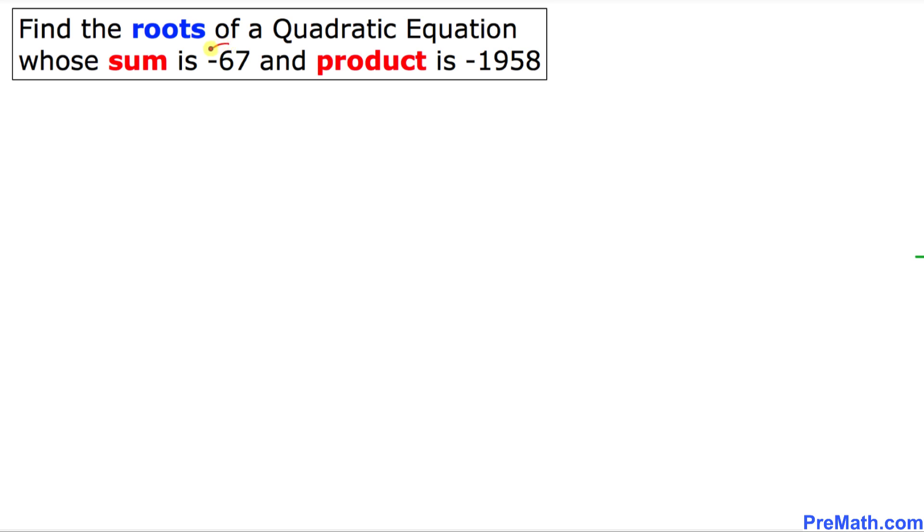We know that the sum has been given to us is negative 67. Let's write down S as a sum equal to negative 67 and our product is negative 1958. So I'm going to call P as a product is negative 1958.